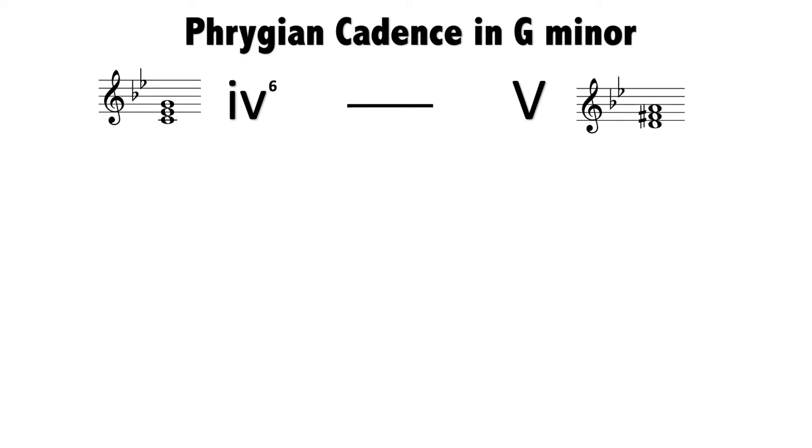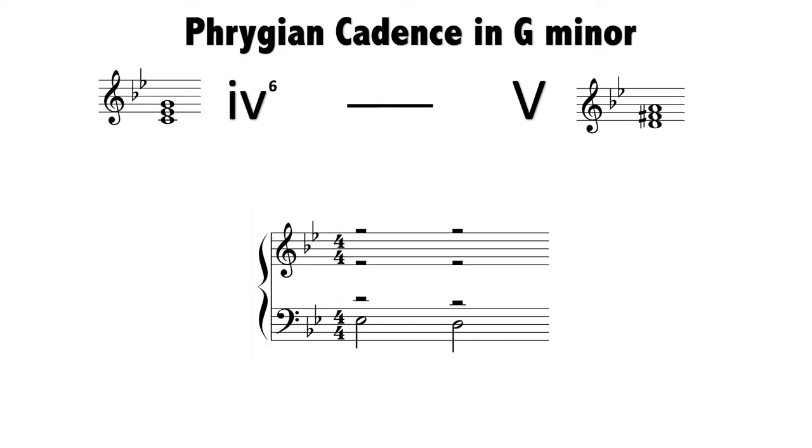We have enough information to determine what bass notes to use for this cadence. For the iv chord, it must be first inversion. The chord is C, E♭, G, which means E♭ must be our bass. For the final chord, it's a root position V chord, so D is our bass. Here we have our bass notes for this cadence.